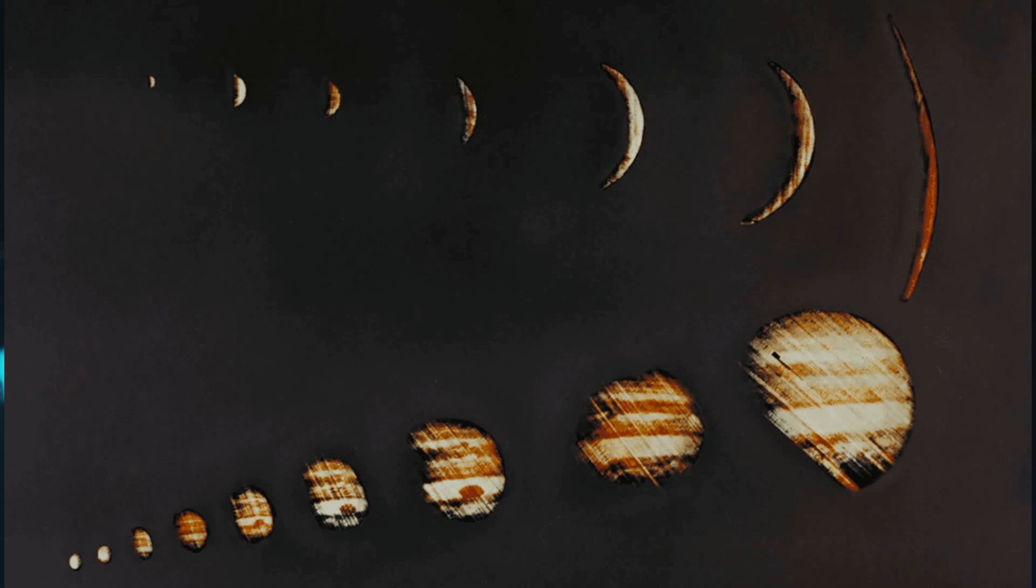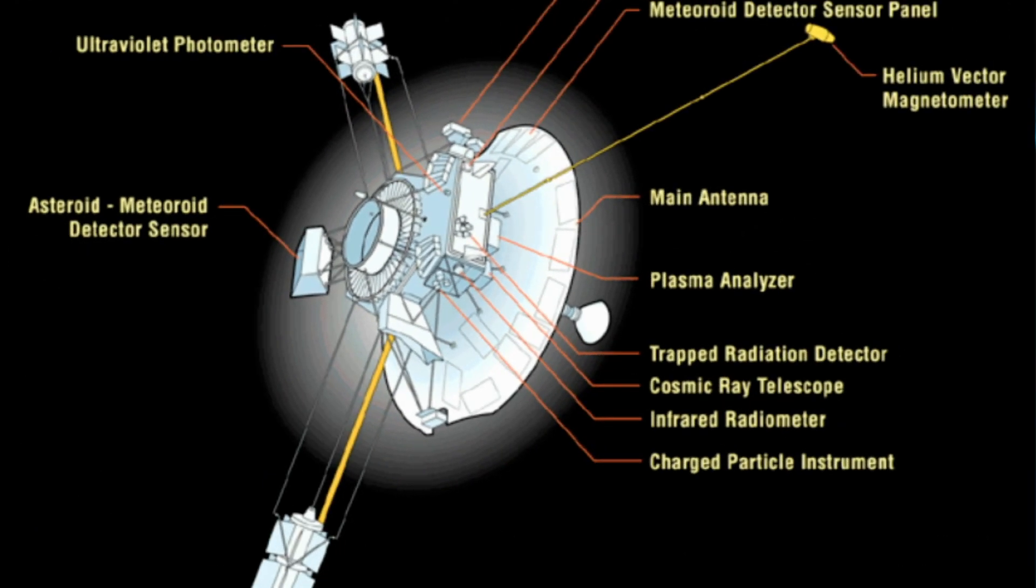When these effects were taken into account, along with all other known effects, the calculated position of the pioneers did not agree with measurements based on timing the return of the radio signals being sent back from the spacecraft. These consistently showed that both spacecraft were closer to the inner solar system than they should be, by thousands of kilometers, small compared to their distance from the sun but still statistically significant.